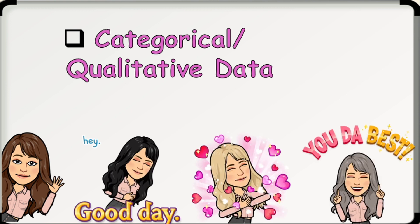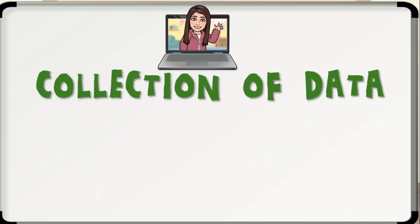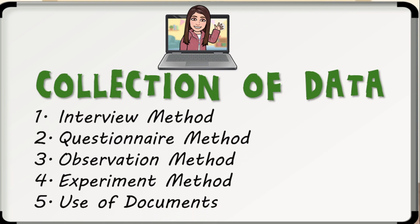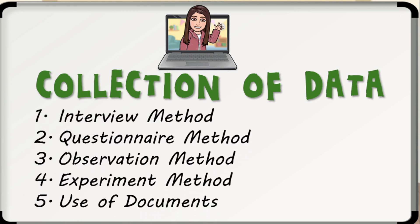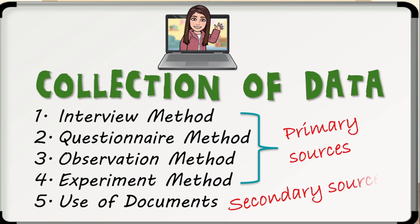or gray. How do we collect data? There are several techniques that may be used in gathering statistical data. We have number one, interview method; number two, questionnaire method; number three, observation method; number four, experiment method; and number five, use of documents. The interview, questionnaire, observation, and experiment methods are considered to be primary sources collected directly by the researcher, while the use of documents is considered to be secondary sources for it uses data that already exists.